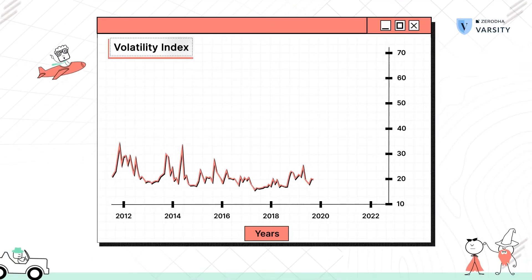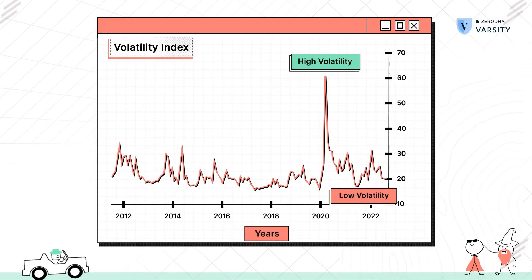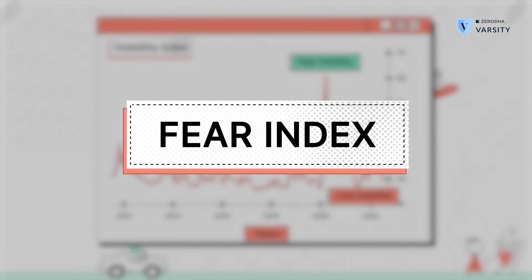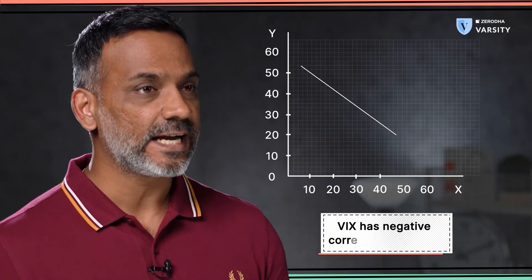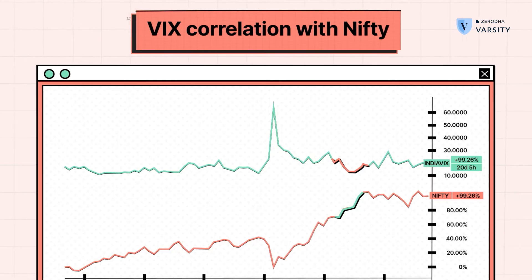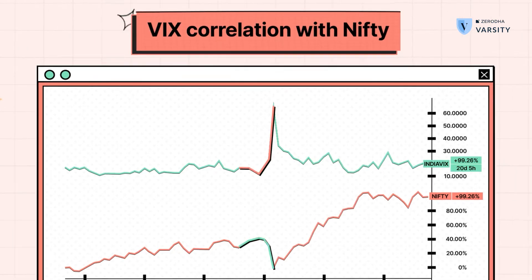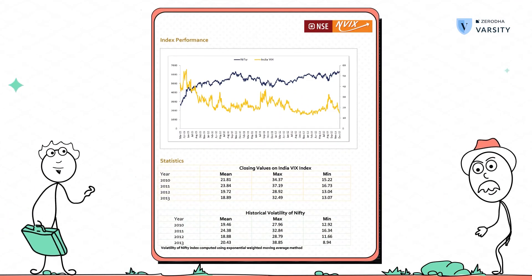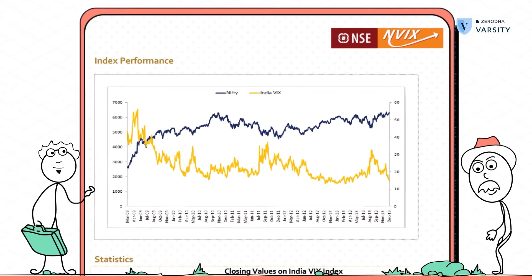Clearly, higher the VIX, higher is the volatility in the market. For this reason, VIX is also called the fear index. VIX has a very strong negative correlation with Nifty — meaning when Nifty increases, VIX would crack, and when Nifty cracks, VIX shoots up. In other words, when Nifty cracks, the fear in the market increases and therefore VIX also increases. I've got this chart from NSE's fact sheet on VIX and you can clearly see the negative correlation at play.